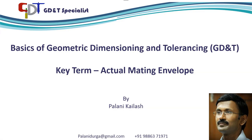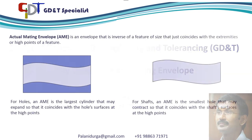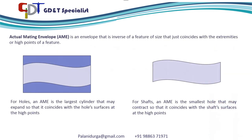Hello friends, this is Palneh Kailash. In this video I am going to explain what actual mating envelope is. Actual mating envelope is an envelope that is inverse of a feature of size or a similar perfect feature counterpart of that, which just coincides with the extremities or high points of a feature.